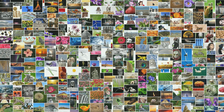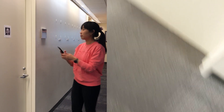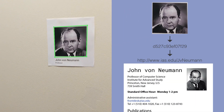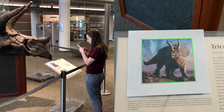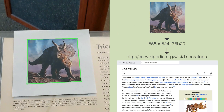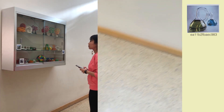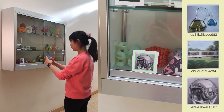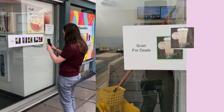We are surrounded by images — imagine if they all contained hidden hyperlinks. For example, a student could quickly access information about a professor's current classes and office hours. They could retrieve a link to information about the history of a dinosaur's discovery, learn the details about the geometric inspirations for small models, or scan to order a snack and view its nutritional information.